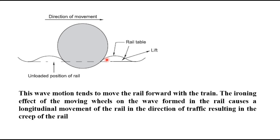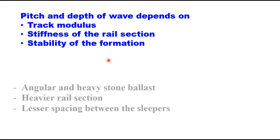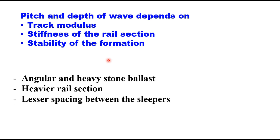The pitch and depth of the wave depend upon the track modulus, stiffness of the rail section, and stability of the formation. According to this theory, creep in rails can be reduced or minimized by use of angular and heavy stone ballast, heavier rail section, and lesser spacing between the sleepers. All these three measures will improve the track modulus, and higher the track modulus, lesser will be the deflection in the rail.